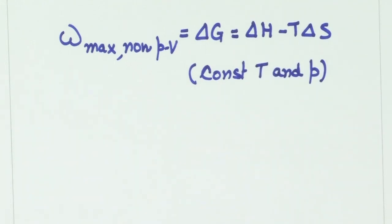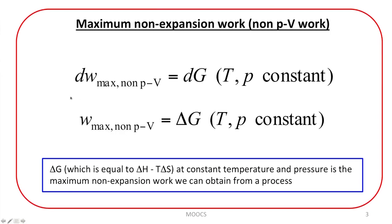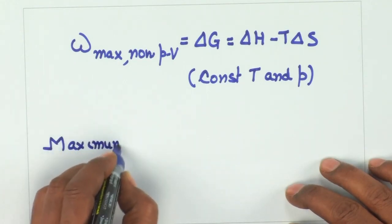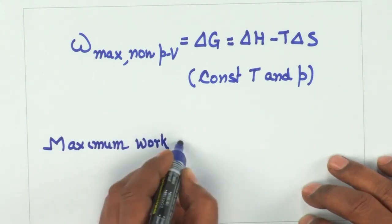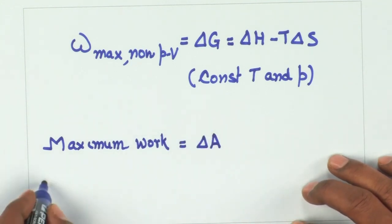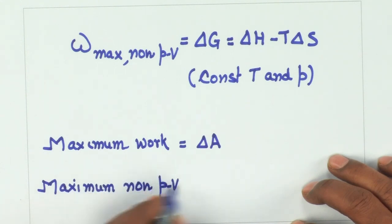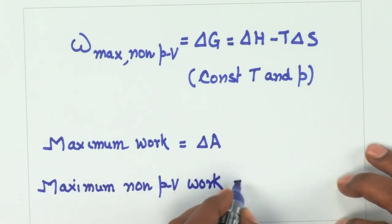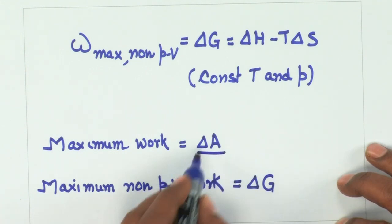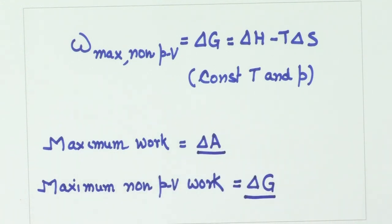And this is what we wanted to prove. So, delta G which equals delta H minus T delta S at constant temperature and pressure is the maximum non-expansion work we can obtain from a process. The point to be remembered is that if we are interested in knowing the maximum work — just maximum work — we need to know delta A. And if we are interested in knowing maximum non-pressure-volume work, this is given by delta G — at constant temperature and volume versus constant temperature and pressure, respectively. Let us not forget the constraints.